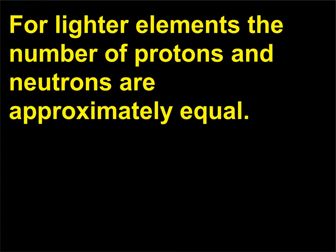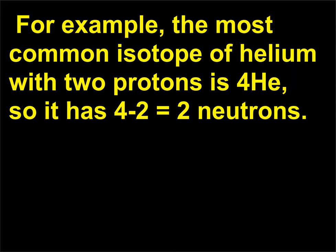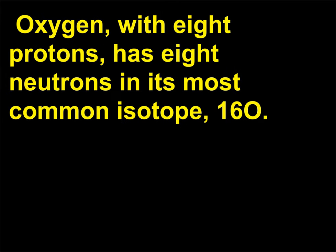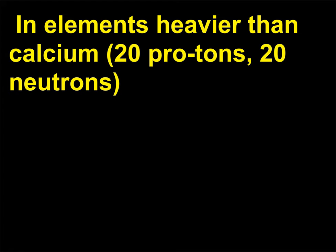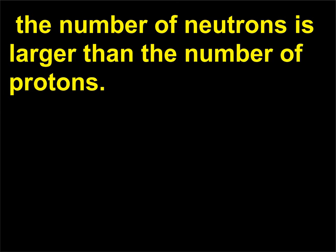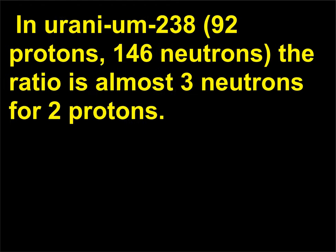For lighter elements, the number of protons and neutrons are approximately equal. For example, the most common isotope of helium with two protons is ⁴He, so it has two neutrons. Oxygen, with eight protons, has eight neutrons in its most common isotope, ¹⁶O. In elements heavier than calcium (20 protons, 20 neutrons), the number of neutrons is larger than the number of protons. In uranium-238, with 92 protons and 146 neutrons, the ratio is almost three neutrons for every two protons.